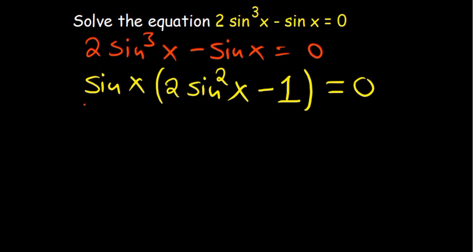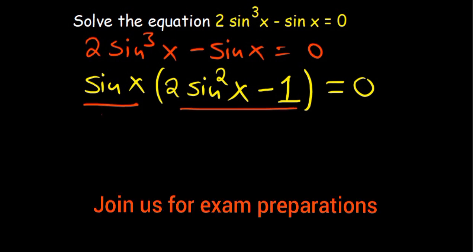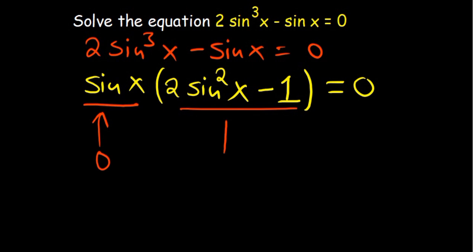So if the product of sinx with whatever is in the brackets is equal to 0, it's either sinx itself is equal to 0 or what is in the brackets is equal to 0. So those are the two possible ways that we can have this equation being equal to 0. So I'll start first of all by the first part, so sinx equated to 0.